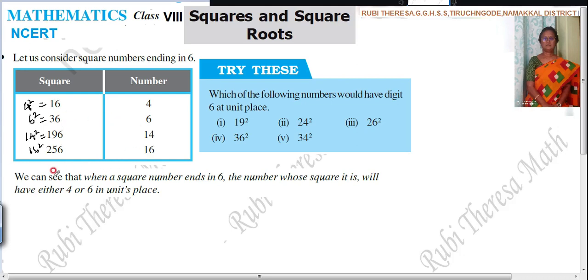That is, we can see when a square number ends in 6. When a square number ends in 6, the number whose square it is will have either 4 or 6 in unit place. In the unit place, what do you have while you are squaring the number? You will have 4 or 6.